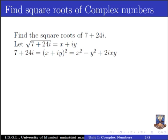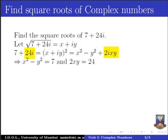We compare the left hand side and right hand side real and imaginary parts. On comparing the real parts, we get x square minus y square equal to 7. On comparing the imaginary parts, we get 2xy equal to 24. Cancelling the common factor 2, we get xy equal to 12, which implies y is equal to 12 by x.